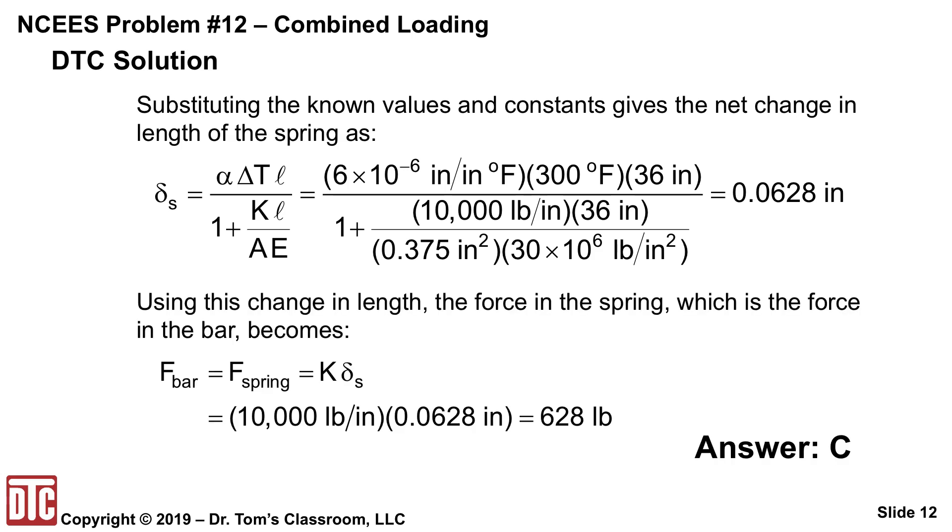So then the actual change in length of the bar is the change in the force in the spring. Force in the bar is equal to the force in the spring, that's K delta S, so 10,000 times 0.0628 gives you 628.